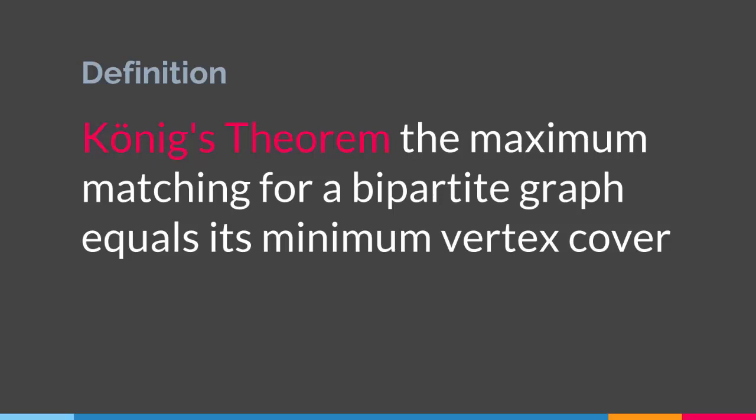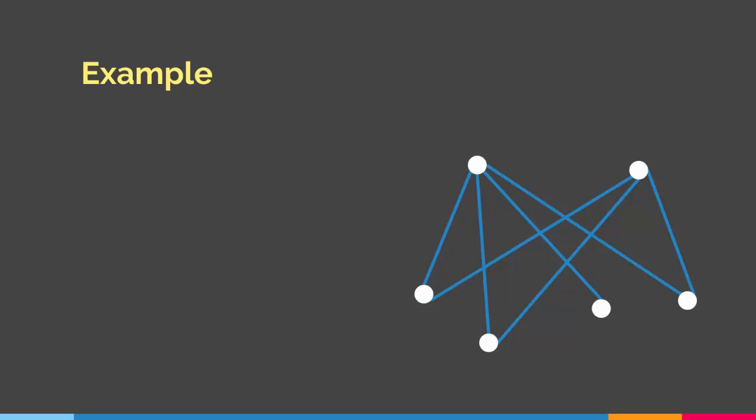Let me give you an example. Let's say we have a graph like this. As you can see, this is a bipartite graph — we have five vertices. According to Koenig's theorem, the maximum matching of this particular graph has to equal its minimum vertex cover. The maximum matching, meaning the maximum number of edges such that no two edges are adjacent, equals two for this bipartite graph.